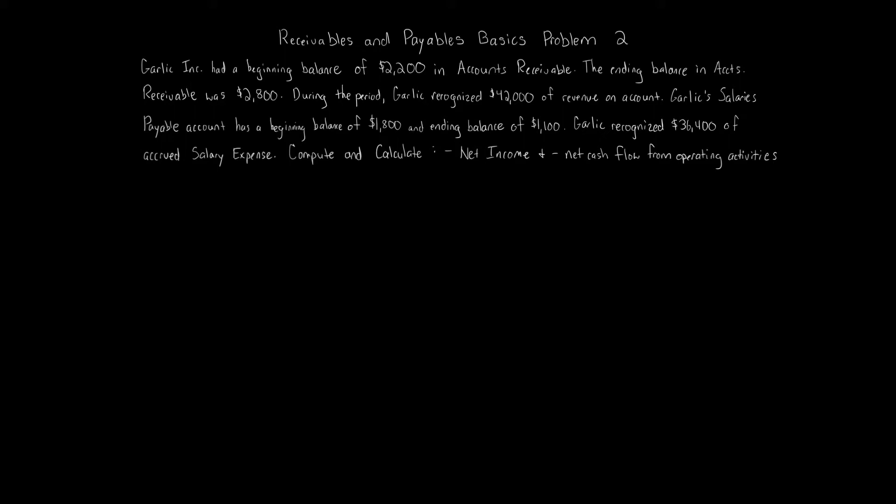The way this information is presented is a little unusual. We're given the ending balance of accounts receivable, the amount of revenue recognized on account during the period, some balances in salaries payable, and the amount of accrued salaries expense. We just need to go through and determine the net income and the net cash from operating activities.